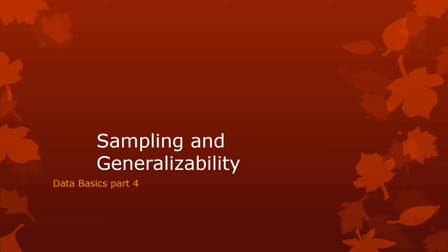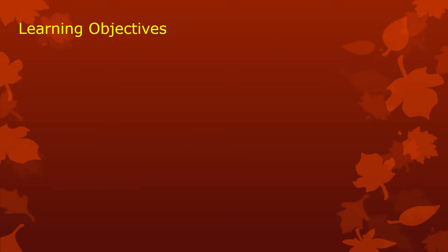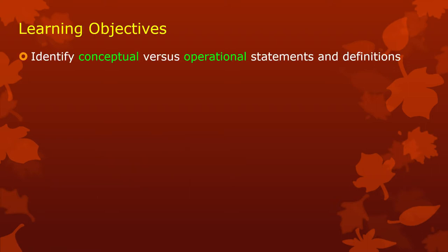This is the fourth section of Data Basics. This follows the textbook relatively closely, although with a little extra information and not focusing on certain aspects of that. This is about sampling and generalizability. The learning objectives are a little ambitious for this video, so I suspect it's going to be longer than I would prefer, but this is really important stuff to get.